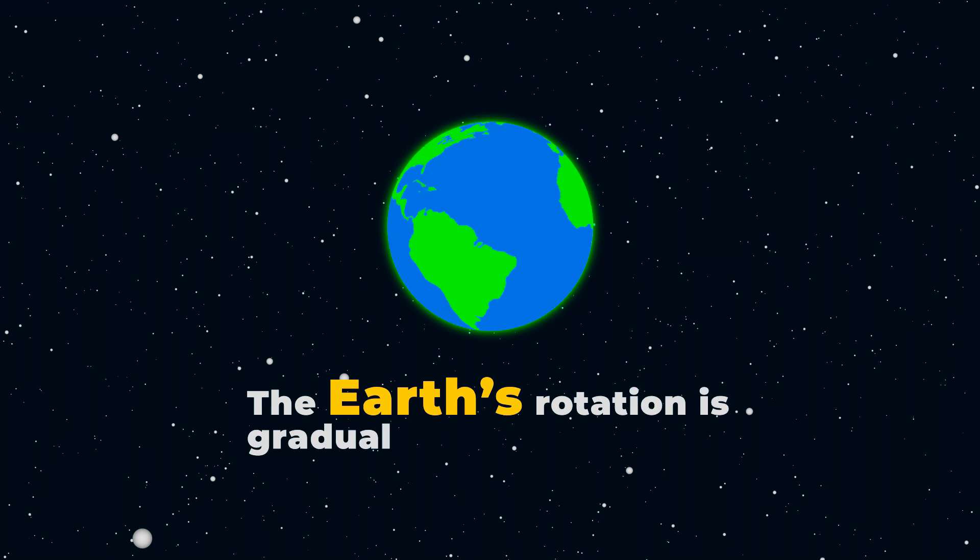The Earth's rotation is gradually slowing down because of the moon. As the fast-spinning Earth attempts to drag ahead of the sluggishly orbiting moon, it causes the moon to slow down its rotation.